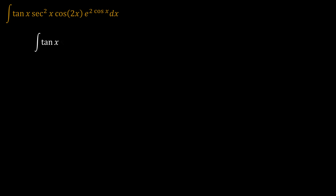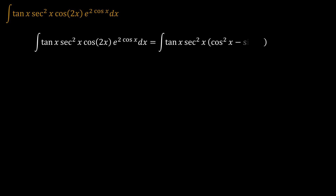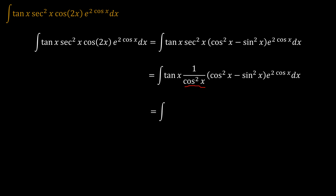The first thing we do is decompose the double angle formulation. Cosine(2x) can be decomposed to a single angle formulation: cosine²(x) minus sine²(x). We know sec²(x) is the same as 1 over cosine²(x), so when this cosine²(x) gets multiplied across, that becomes tangent(x) times the bracket (1 minus tan²(x)) times e to the power 2cos(x).